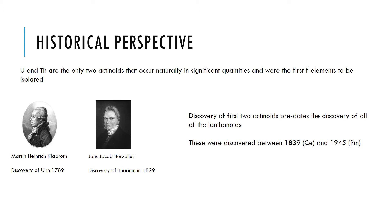Interestingly, the discovery of these first two actinoids actually predates the discovery of all of the lanthanoids. These were discovered between 1839, where cerium was the first of the lanthanoids to be discovered, and 1945, where promethium was the last of the lanthanoids to be discovered. So all of these elements have absolutely wonderful names.